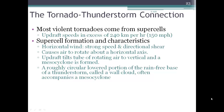Tornadoes are associated with thunderstorms, and most of the violent tornadoes come from supercell thunderstorms because they have very strong updrafts in excess of 150 miles per hour. Also because they're a little longer lived, they have more time to spawn tornadoes. Some of the characteristics of a supercell formation are listed here.